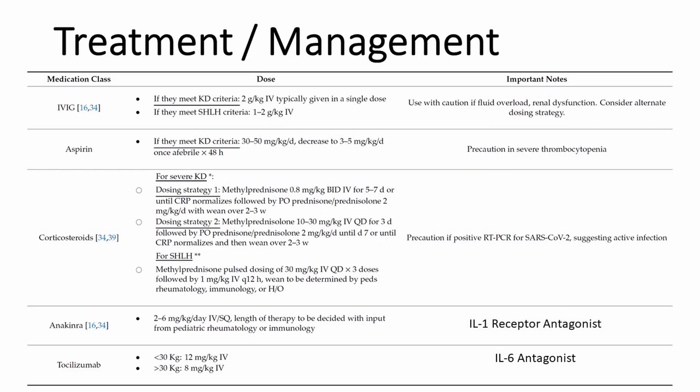The goals for treatment of MIS-C are to decrease systemic inflammation and restore organ function in order to decrease mortality and reduce the risk of long-term sequelae, such as the development of coronary artery aneurysms or persistent cardiac dysfunction. Management depends in part on the clinical presentation — distributive shock versus cardiac dysfunction versus Kawasaki-like or other inflammatory presentations — but these can overlap, so you treat the presentation as you go.